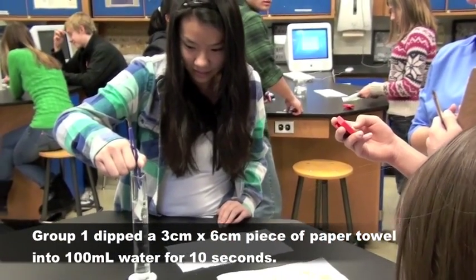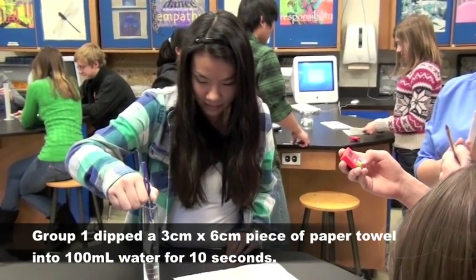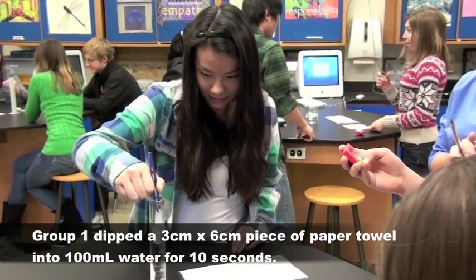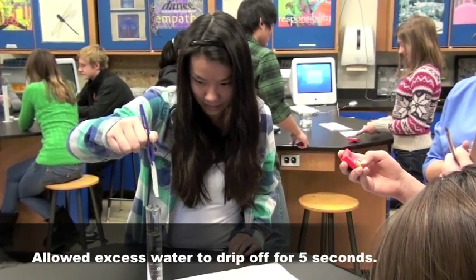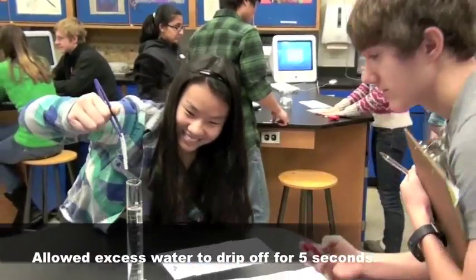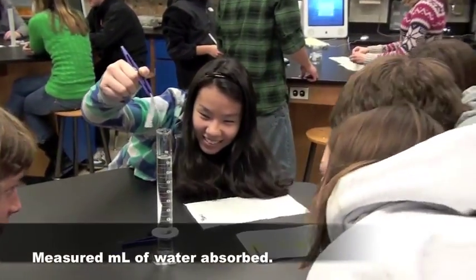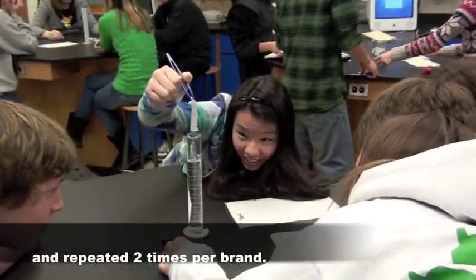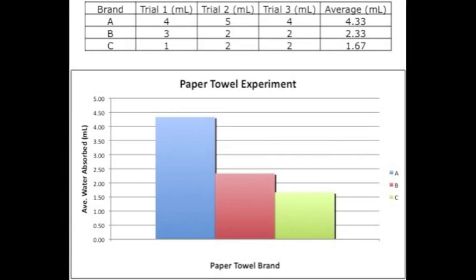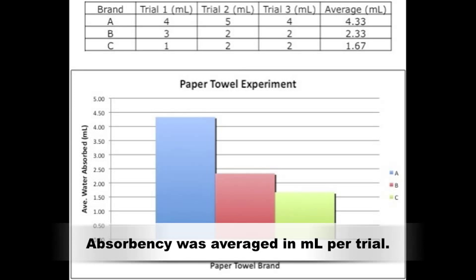Group 1 dipped a 3 cm x 6 cm piece of paper towel into 100 ml of water for 10 seconds, allowed excess water to drip off for 5 seconds, measured ml of water absorbed, and repeated two times per brand. Absorbency was averaged in ml per trial.